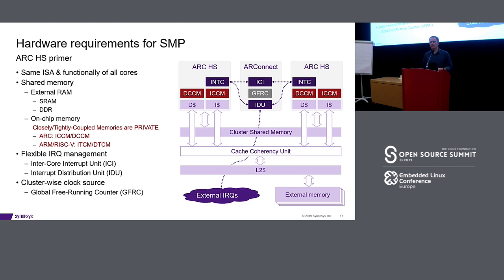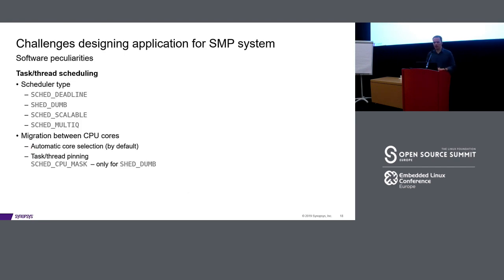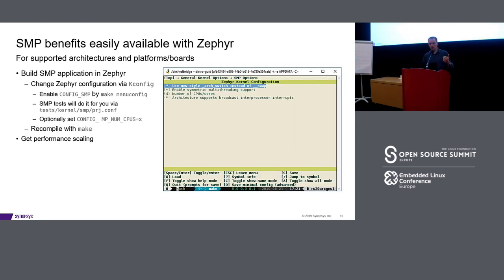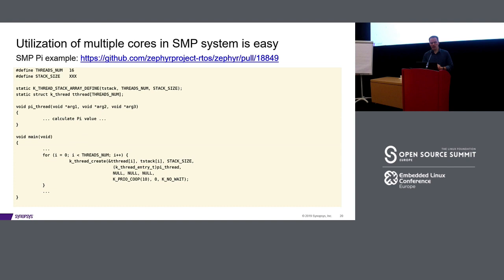Challenges in developing software for SMP systems include: scheduling must be done right at runtime or you lose performance for nothing; migration cost between CPUs must be considered and benchmarked; and shared resources — you cannot use the same peripheral simultaneously from two cores, so you need locking, which can also lose performance. On the positive side, if your platform and board are supported in Zephyr, configuration is very simple — you just indicate you want SMP with a couple of cores, rebuild, and execute.